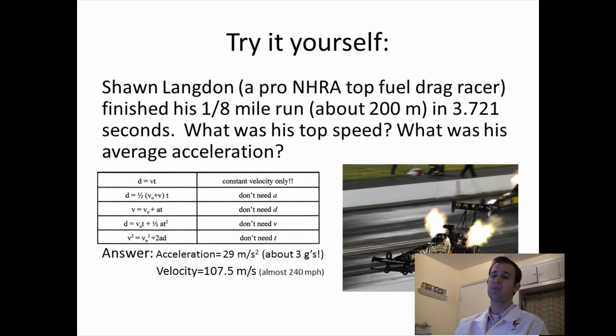And the answers: his average acceleration is about 29 meters per second squared. That's almost three G's. And his final velocity, if we're assuming it's a constant acceleration, the final velocity is 107.5 meters per second. That's almost 240 miles per hour. Now, for any of you guys that were actually watching the race, you'll realize our calculated value, this 240 miles per hour, is different than his actual value, which was 330-something miles per hour. And the reason for that is we're assuming it's a constant acceleration, when in fact these top fuel racers are not constant acceleration. But to simplify things, we like to assume that sometimes, and this is what we would get if they did accelerate at a constant rate.